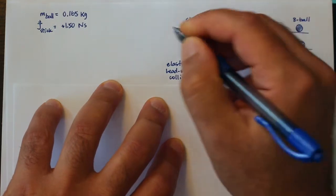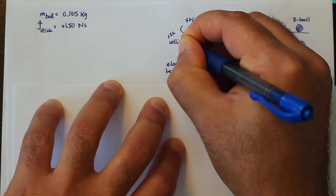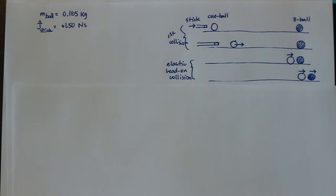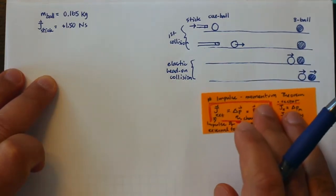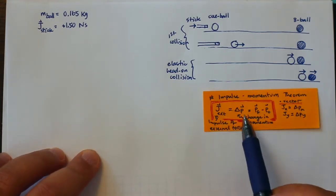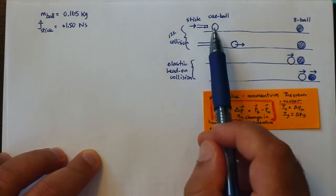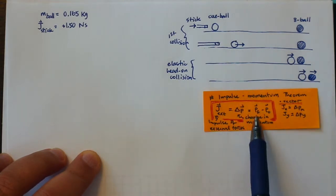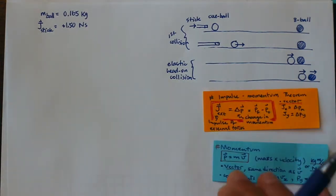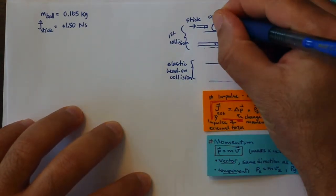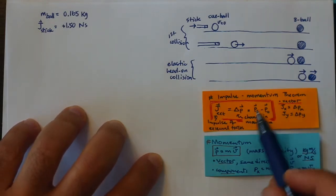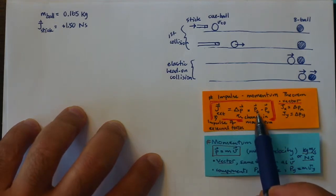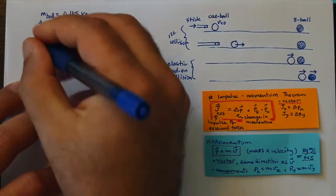Let's start from the first collision and figure out what happens there. A stick hits a ball and gives it some impulse. By the momentum-impulse theorem, the impulse of external forces is going to change the momentum. There's a force applied to the cue ball as an external force to that system, and that is going to change the cue ball's momentum. Momentum is mass times velocity, so if initially the cue ball is at rest, the initial momentum equals zero. That means the impulse of the external force is equal to the final momentum.